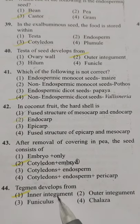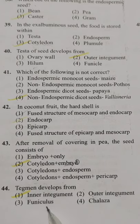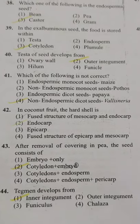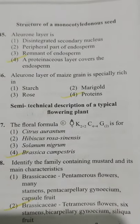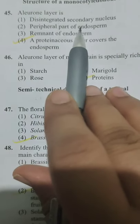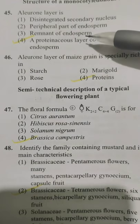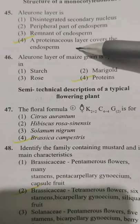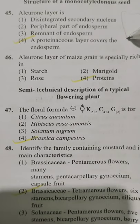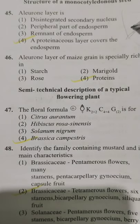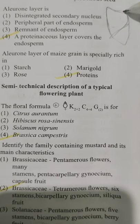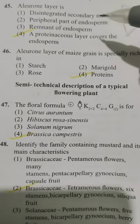Tegmen develops from — Option 1 inner integument, Option 2 outer integument, Option 3 funiculus, Option 4 chalaza. Tegmen always develops from the inner integument — Option 1. Next: aleurone layer is — Option 1 disintegrated secondary nucleus, Option 2 peripheral part of endosperm, Option 3 remnant of endosperm, Option 4 a proteinaceous layer that covers the endosperm. In monocot seeds, the aleurone layer is a proteinaceous layer that covers the endosperm — Option 4.